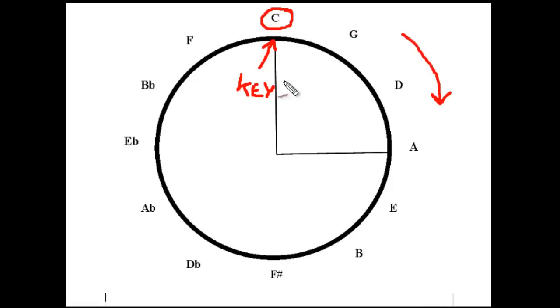And at a 90-degree angle, we have the relative minor. So the relative minor to the key of C is A minor.